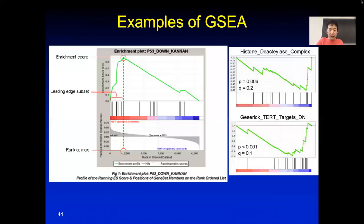So you can see here: this is the p-value and this is the q-value, which is the false discovery rate. The FDR is usually a larger number than your p-value. Okay, that's all for today.